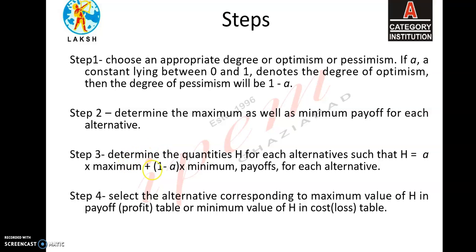Step number 3: determine the quantity H for each alternative such that H is equal to alpha multiplied by maximum payoff plus (1 minus alpha) multiplied by minimum payoff for each alternative. Step number 4: select the alternative corresponding to the maximum value of H in the payoff (profit) table, or the minimum value of H in the cost or loss table.